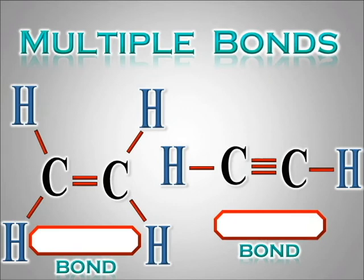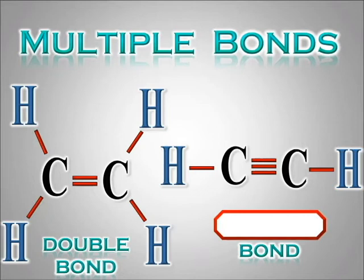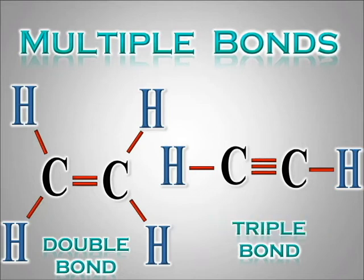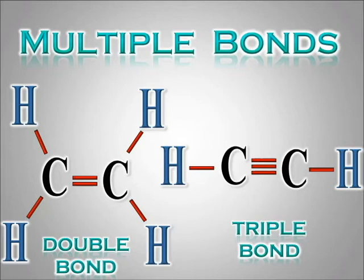Multiple bonds are when the same two atoms share more than one pair of electrons. A double bond looks like an equal sign, and a triple bond looks like three bars. Double bonds are stronger than single bonds, and triple bonds are stronger still. And since stronger bonds are shorter: double bonds are shorter than single bonds, and triple bonds are shorter than double bonds. They take more energy to break and gave off more energy when they formed.